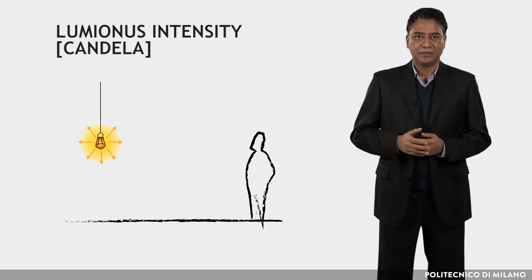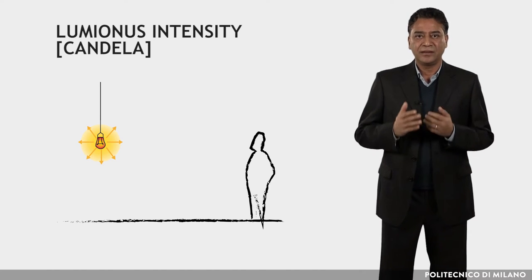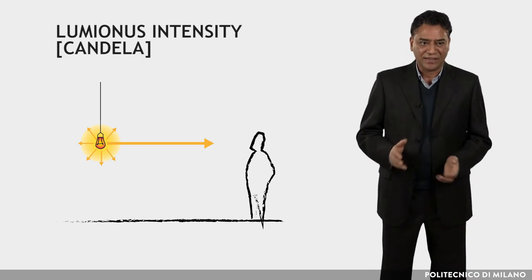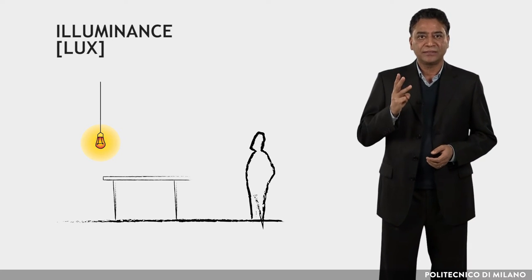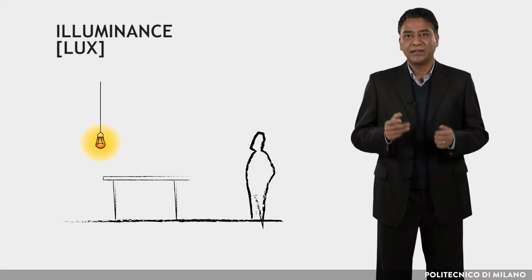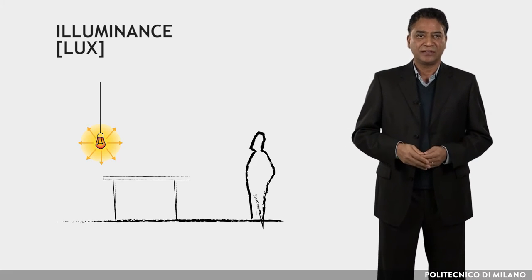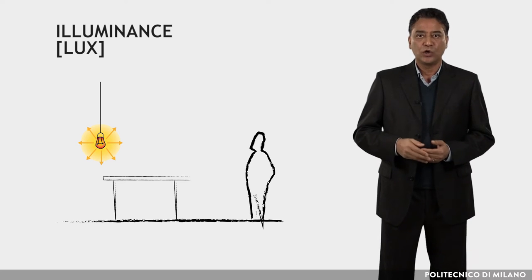The third one is illuminance. The unit is lux. This is the ratio of the luminous flux received by a surface to the area of the surface itself. It indicates the amount of light that strikes a unit area.